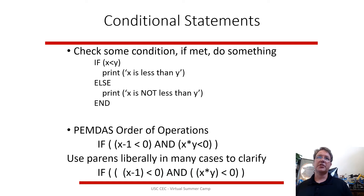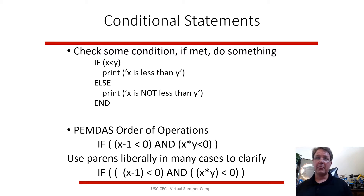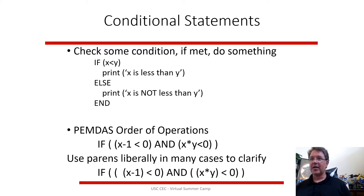A conditional statement checks a condition: if true, print one thing; if not, print something else. Everything typically follows PEMDAS — Please Excuse My Dear Aunt Sally — order of operations. If you're unsure, put more parentheses in to make sure it does exactly what you want. For example: check if x minus 1 is less than zero AND x times x is less than zero — if both are true, the overall statement is true.